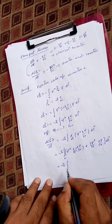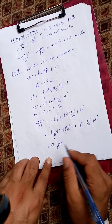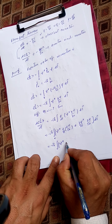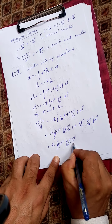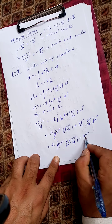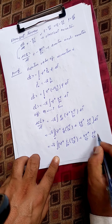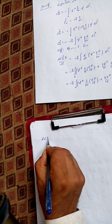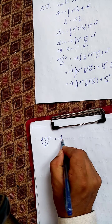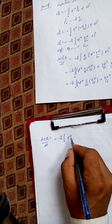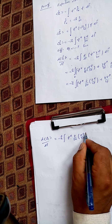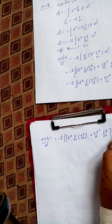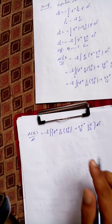Since the differentiation with respect to x and t can be swapped, we write this as -iħ ∫ [ψ* ∂/∂x(∂ψ/∂t) + (∂ψ*/∂t)(∂ψ/∂x)] dτ. So d⟨p_x⟩/dt = -iħ ∫ [ψ* ∂/∂x(∂ψ/∂t) + (∂ψ*/∂t)(∂ψ/∂x)] dτ. Let this be equation number one.